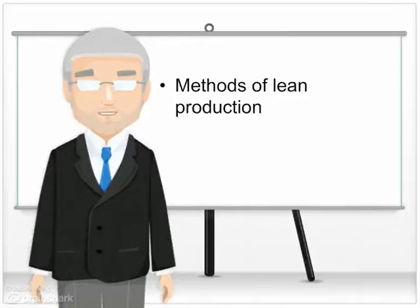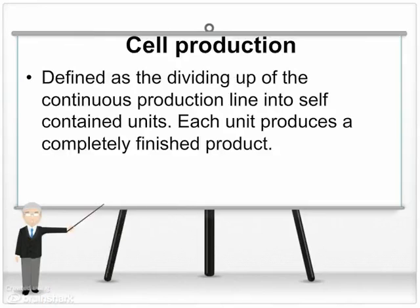Methods of Lean Production: Cell Production. Cell production is defined as the dividing up of the continuous production line into self-contained units. Each unit produces a completely finished product. Even though this may only be a component part, seeing a completed product is much more satisfying for the workforce than only contributing to a minor repetitive task.